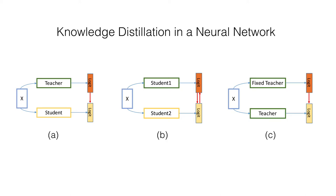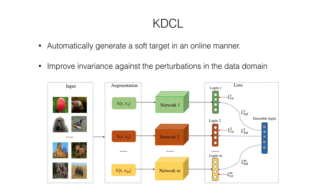In the offline distillation framework, the teacher is pre-trained first and then fixed, and the knowledge transfer is one-way and has two stages. Online distillation methods simplify the transfer by merging individual training processes into a single one. Recently, self-distillation shows that distilling a converged teacher model into a student model of identical network architecture can further improve generalization ability compared to the teacher. So, could we use a small network to improve a model with larger capacity? The answer is yes.